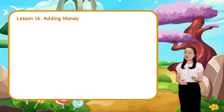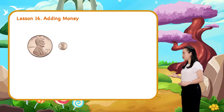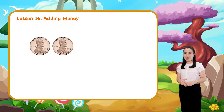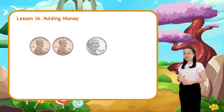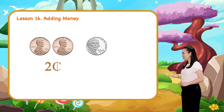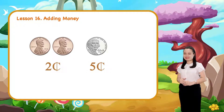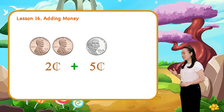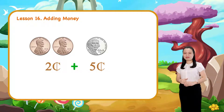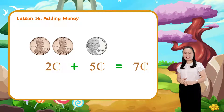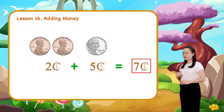Here we have two pennies and a nickel. Two pennies are worth two cents. The nickel is worth five cents. Adding two and five, we get seven. So, we have seven cents.